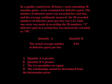In a quality control test, 50 boxes, each containing 30 machine parts, were examined for defective parts. The number of defective parts was recorded for each box, and the average arithmetic mean of the 50 recorded numbers of defective parts per box was 1.12. Only one error was made in recording the 50 numbers.